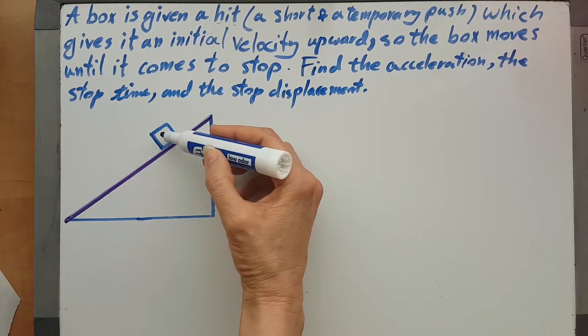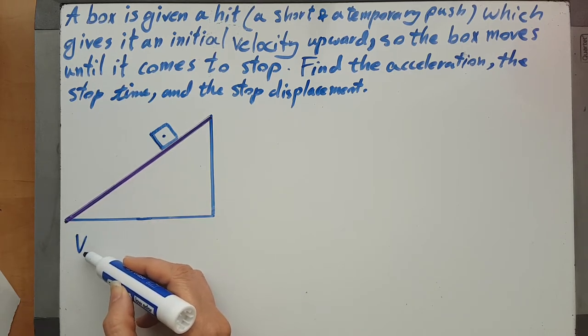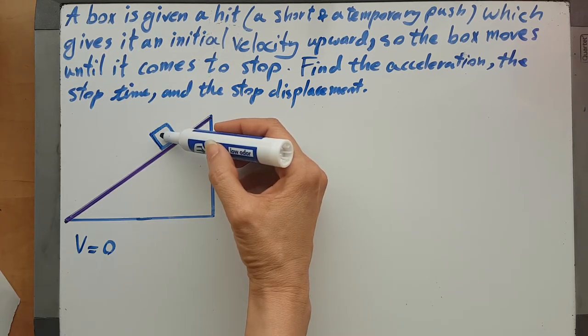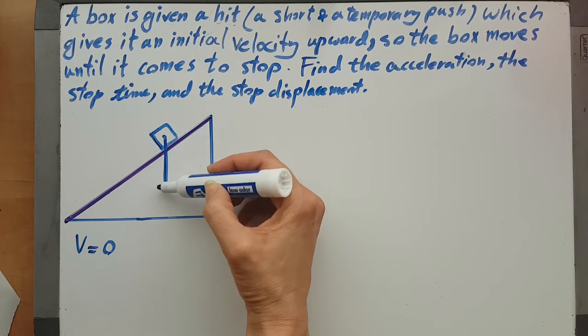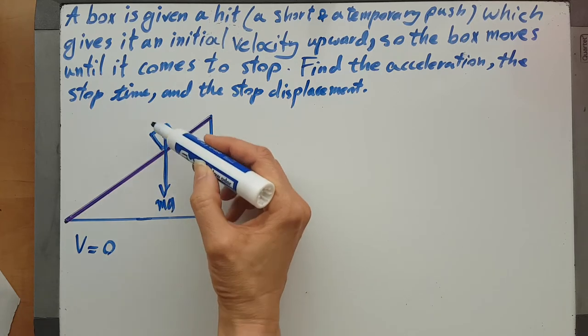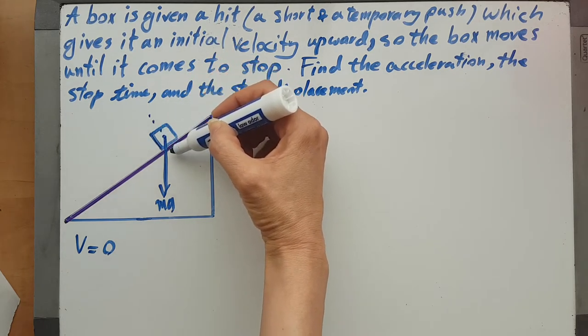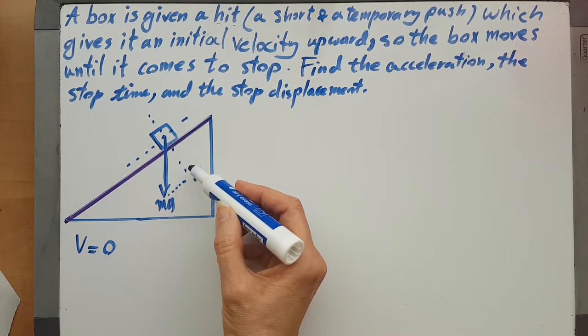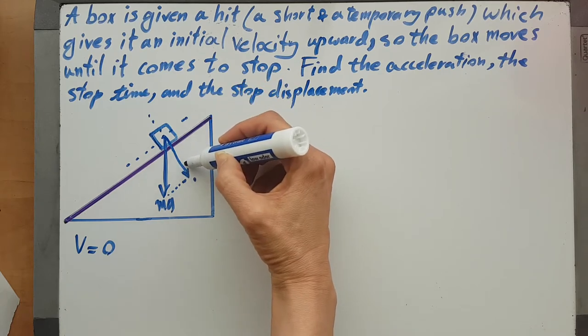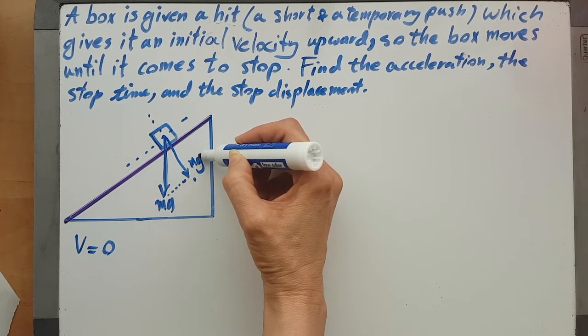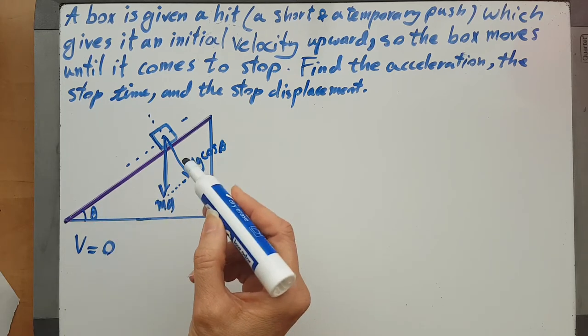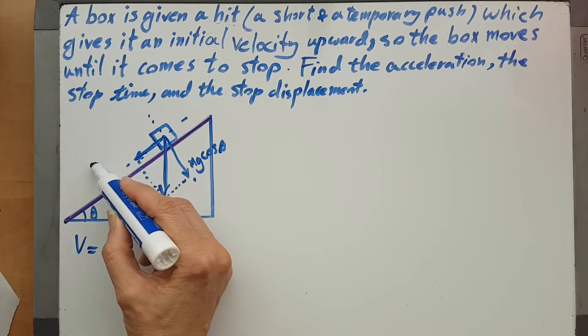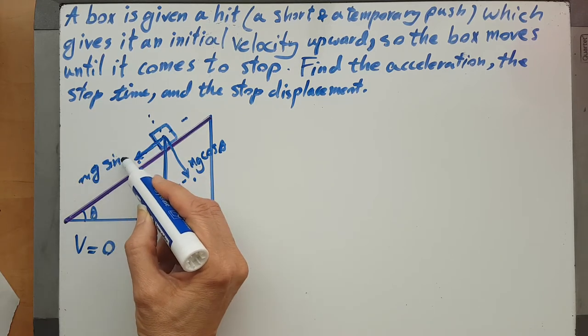Actually do this. First thing we know that the final velocity is of course zero, right? So this is mg, then we divide it to its components: mg cosine theta and mg sine theta.